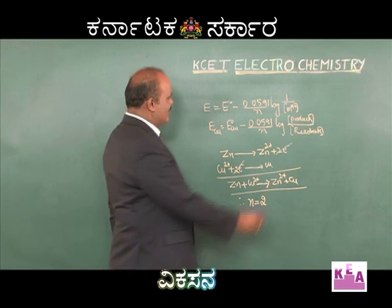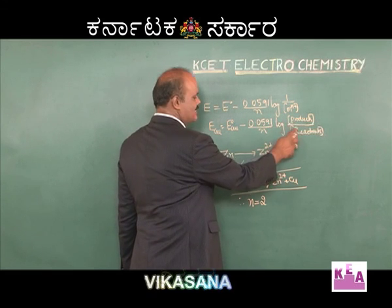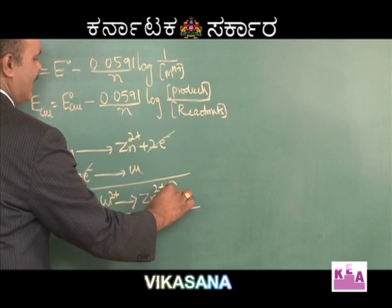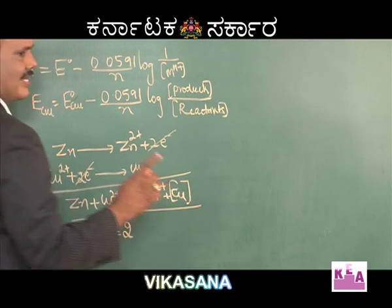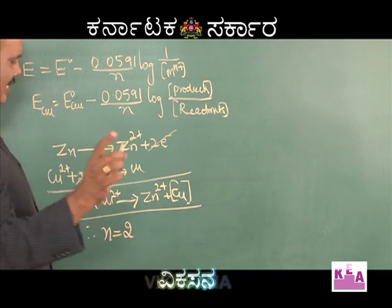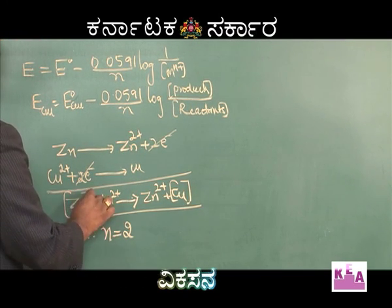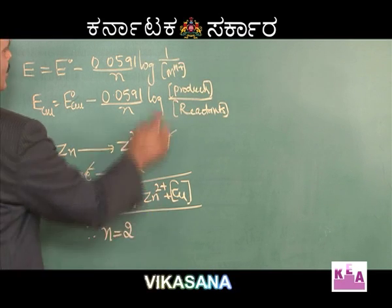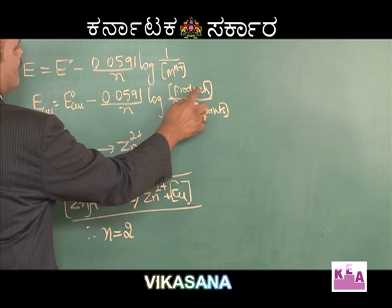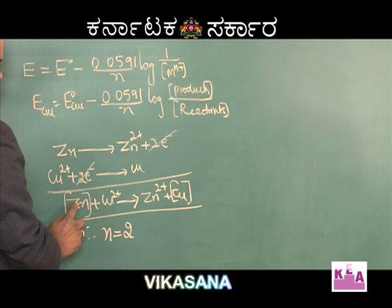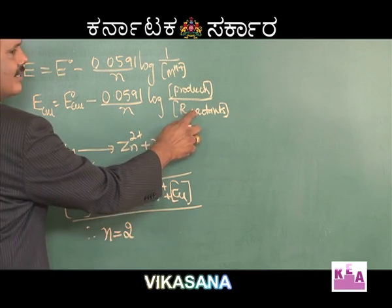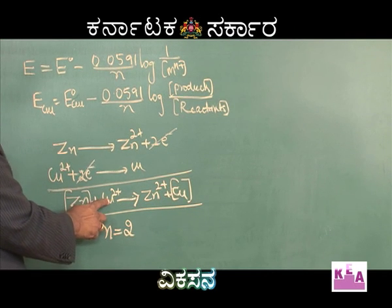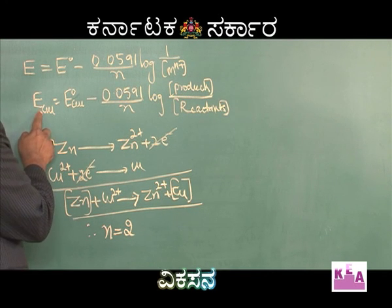Now, for the concentration terms: the concentration of any solid element is taken as unity. Therefore, in the case of the Daniel cell, the product concentration is [Zn²⁺] and the reactant concentration is [Cu²⁺]. So we use [Zn²⁺] and [Cu²⁺] concentrations to calculate the cell potential.